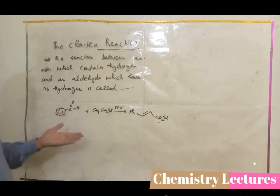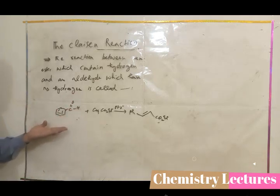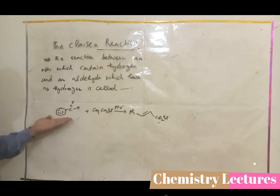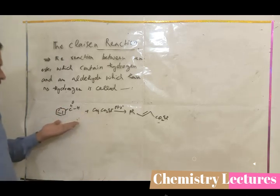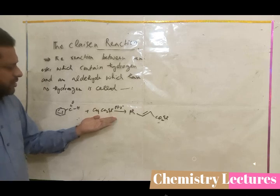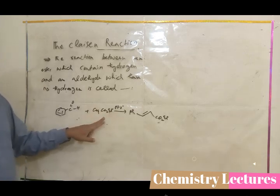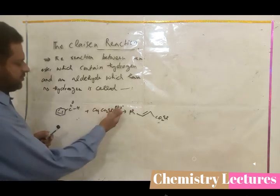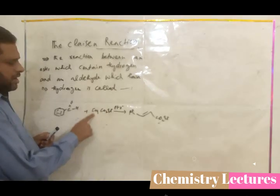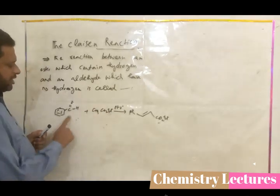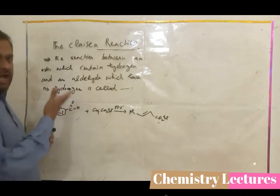For example, we have benzaldehyde here. Benzaldehyde has no alpha carbon hydrogen — the alpha carbon has no hydrogen. So when you treat this with base in the presence of an ester, the base will abstract a proton from the ester's alpha carbon, and this carbanion will attack on the aldehyde. This is the basis of the reaction.